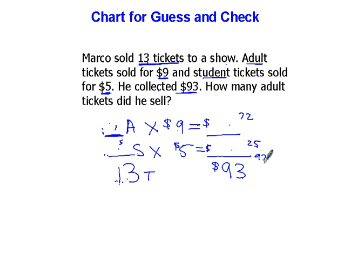97 is too much money. He only makes 93. So I'm going to guess a different combination. And I know I need to have less money. So if I want less money, I've got to have more of these $5 tickets and less of the expensive tickets. You see, the more $5 tickets that I sell, the less money I'm going to make. I want to sell a lot of those $9 tickets if I'm going to make a lot of money.